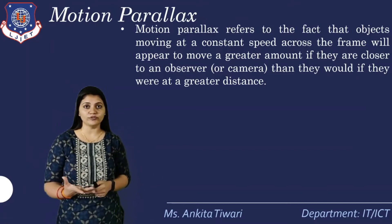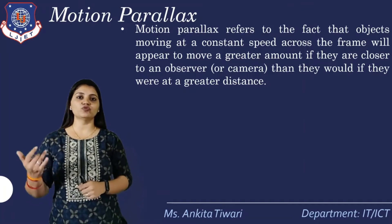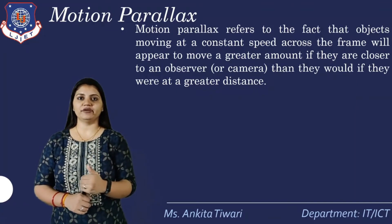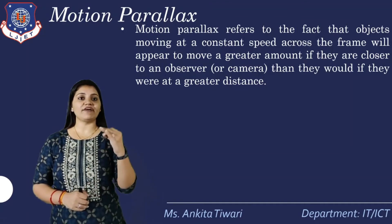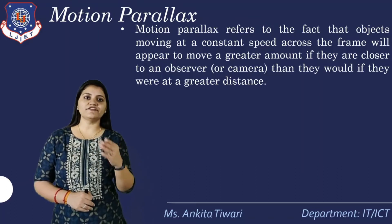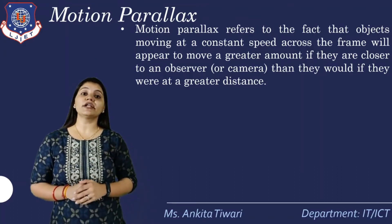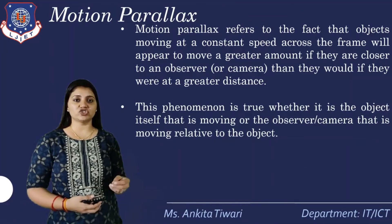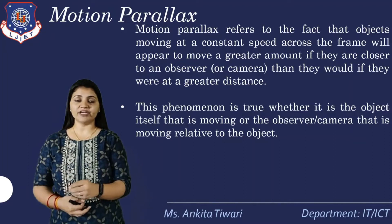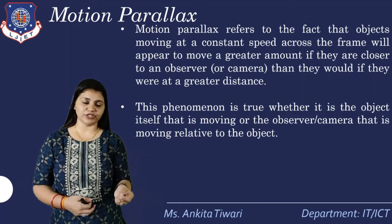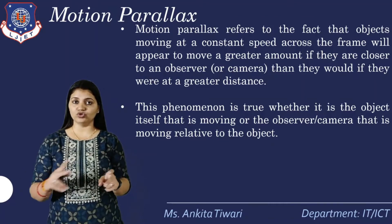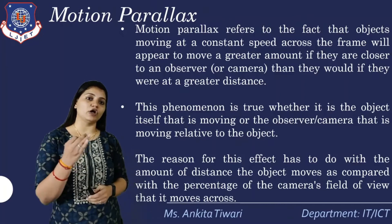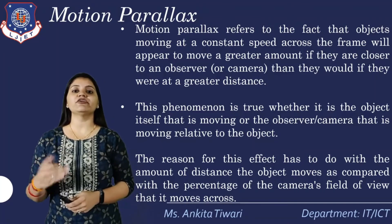Motion parallax refers to the fact that an object moving at a constant speed across the frame will appear to move to a greater amount if it is closer, and if it is at a greater distance it is more difficult to track that object. This phenomenon is true whether it is the object itself that is moving or the camera that is moving relative to the object. The reason for this effect has to do with the amount of distance the object moves compared with the percentage of the camera field of view that it moves across.